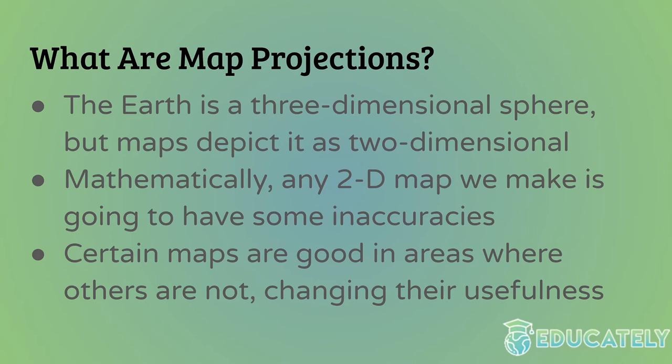So there are many map projections that have evolved and been created over time based on different needs. Sometimes geographers have wanted to make maps that are good at one thing, such as navigating the seas, over something else, because they may have drawbacks. Every map basically has a drawback in some way and some positives, so they're good in different aspects.